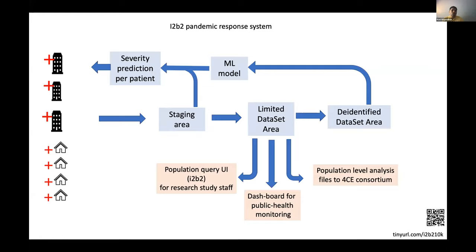EHRs were there — electronic data was being collected, the expertise was there — but we couldn't put it together in time to predict severity. This could have saved lives. It was a wake-up call: everything is there but it's just not falling into place. We've developed severity models in the United States, and Epic does have a severity score, though its development is somewhat controversial.